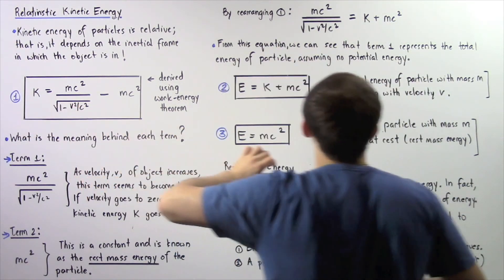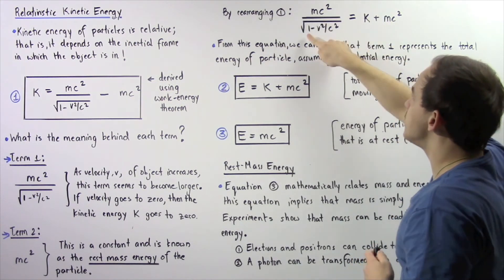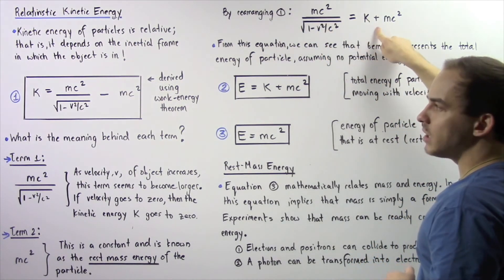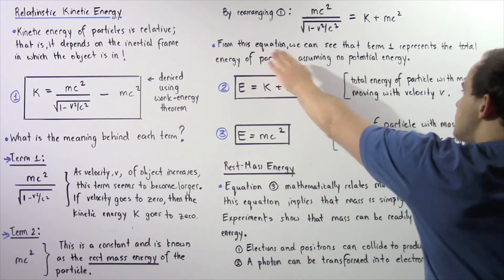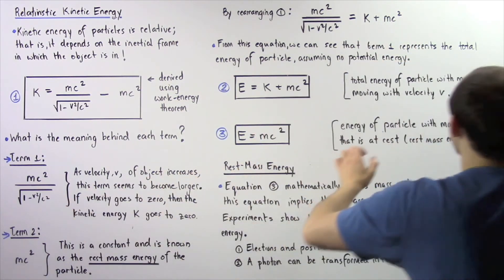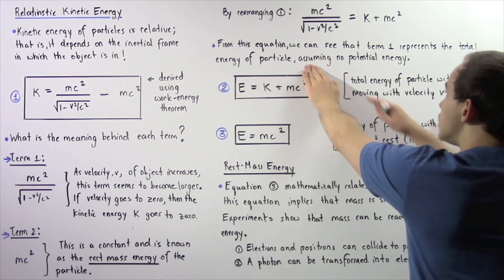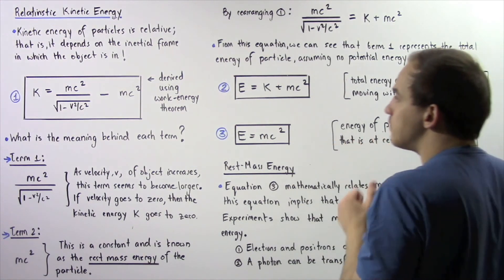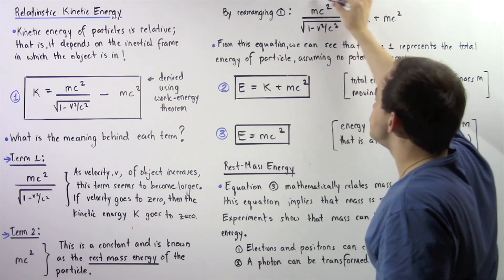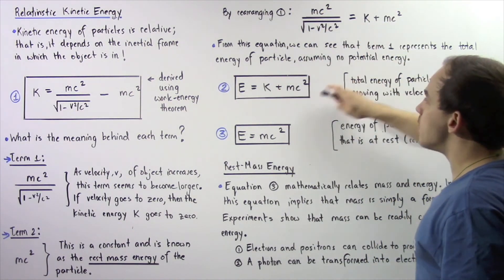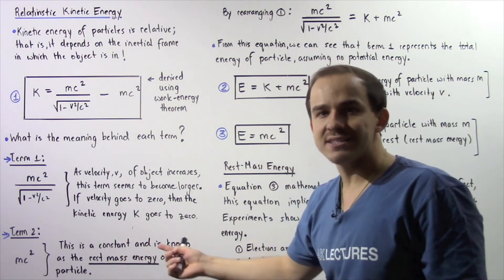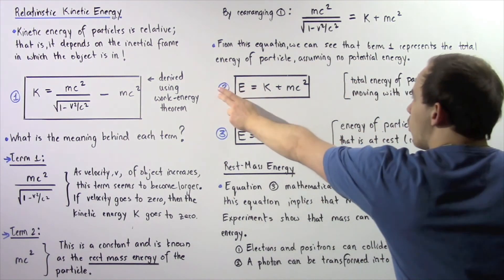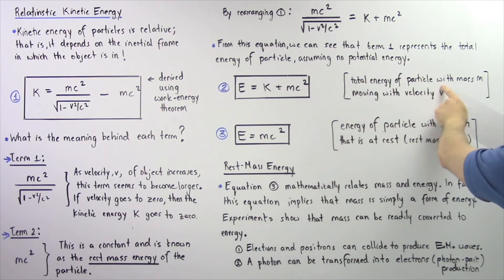By rearranging the kinetic energy equation, we get mc squared divided by the square root of 1 minus v squared over c squared equals K plus mc squared. From this equation, term number 1 represents the total energy of the particle — assuming no potential energy. So the total energy E equals the kinetic energy K plus mc squared, where mc squared is the rest mass energy. This equation gives us the total energy of a particle of mass m moving with velocity v.